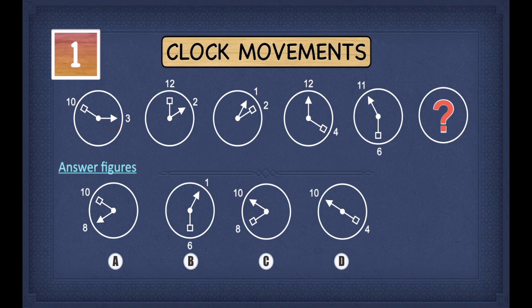The arrow is first pointing towards the three in the first diagram. The second diagram, it's pointing towards two. In the third it is one. In the fourth diagram it is pointing towards twelve, and the final diagram, the fifth one, it's pointing towards eleven.